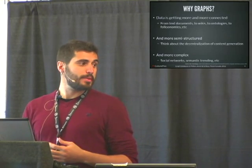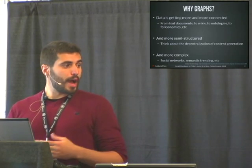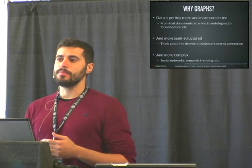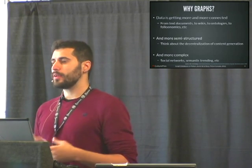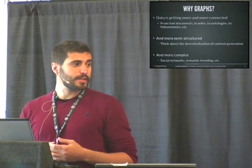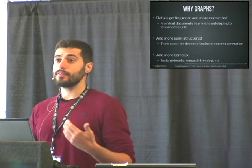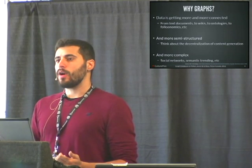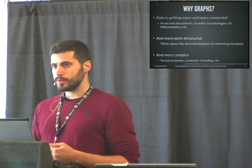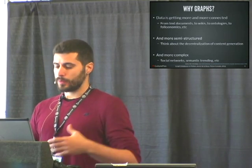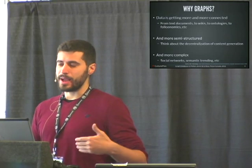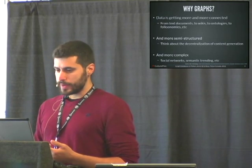The second trend he identified is that data is getting more semi-structured, and that is also true, because now a lot of systems are based on services and we are using REST APIs, software, even XML, and the decentralization of content generation is a fact. And finally, data is getting more and more complex — you can just think about Facebook and the really huge social network they have, and all the ways to make semantic trends like in Twitter.